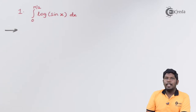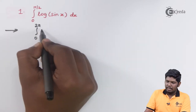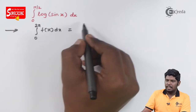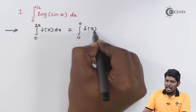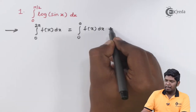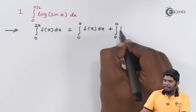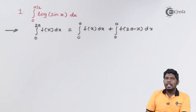Property number three states that the integral from 0 to 2a of f(x) dx can be written as the integral from 0 to a of f(x) dx plus the integral from 0 to a of f(2a minus x) dx. Using this property, we are going to find the given integral.